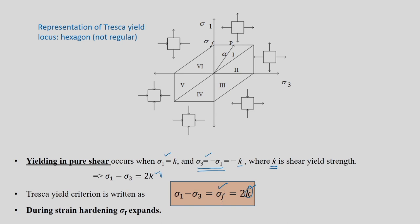The Tresca yield function can be drawn on paper in the form of a hexagon — not a regular hexagon. It is drawn between sigma_1 and sigma_3. This hexagon has six zones: zone 1, 2, 3, 4, 5, 6. In all these zones, you can show the state of stress schematically.